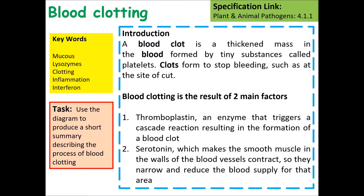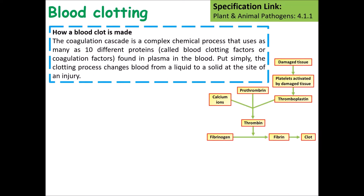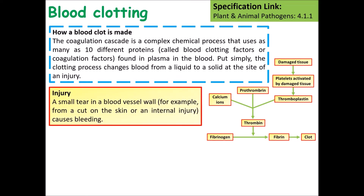Another way that the body will protect itself is by forming blood clots. A blood clot is a thickened mass of blood and other tiny substances called platelets, and these clots stop excess bleeding. A blood clot forms as part of a cascade process involving many different chemicals and proteins.